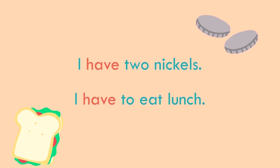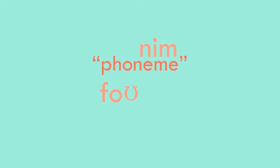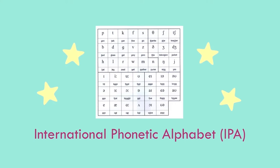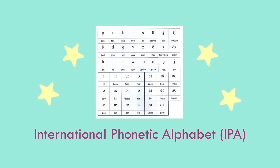Let's take a look at these two sentences: 'I have two nickels' and 'I have to eat lunch.' Notice how the first use of 'have' ends with a V sound and the second ends with an F sound. We use both pronunciations interchangeably depending on what we want to communicate. To describe phonemes in writing, we use a system called the International Phonetic Alphabet, which consists of over 100 symbols.